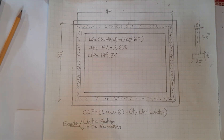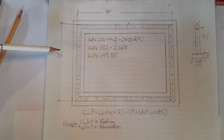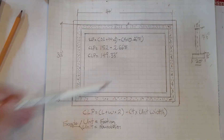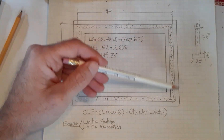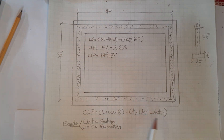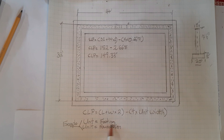The formula for centerline perimeter is: centerline perimeter equals (length plus width) times two. The length and width we're talking about are the actual building dimensions — 32 and 44 feet. So length plus length plus width plus width gives us the outside perimeter. And then from that we subtract four times the unit width. The unit can be our footing or our foundation.